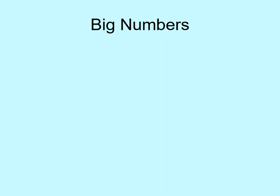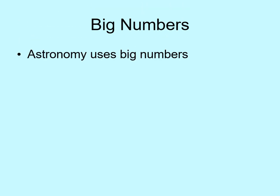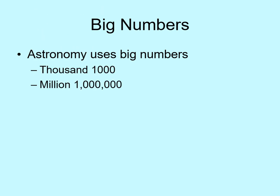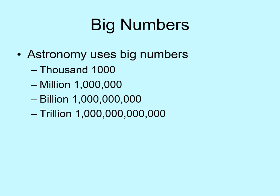Now it's time to look more closely at big numbers. You already know that astronomy deals with really big numbers, and you're probably familiar with these ones: a thousand, a million, a billion, maybe even a trillion, if you keep track of things like federal budget discussions. But in astronomy, those aren't really big numbers.